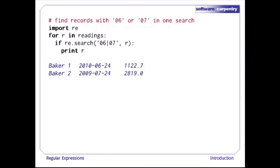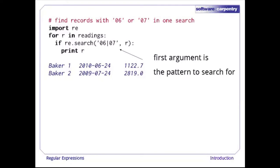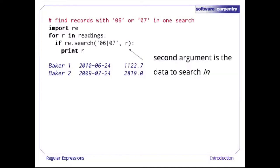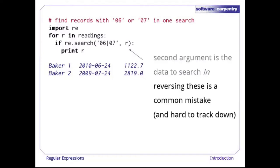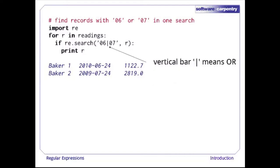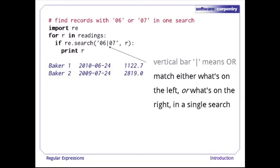But look what happens if we want to match a month of 06 or a month of 07 — we can combine the two in a single pattern. The first argument to re.search is the pattern we are searching for, written as a string. The second argument is the data we are searching in. A very common mistake is to put the data first and the pattern second. The vertical bar in the pattern means OR.